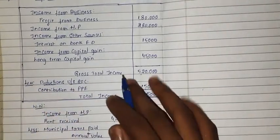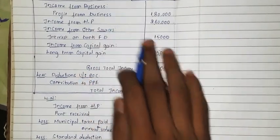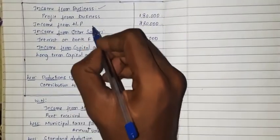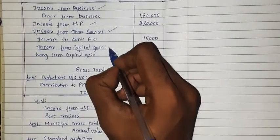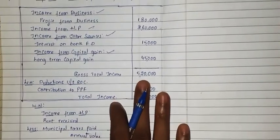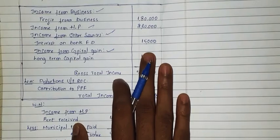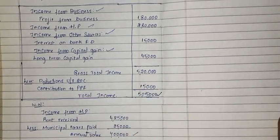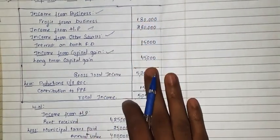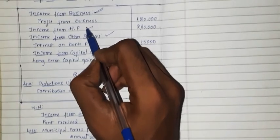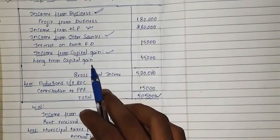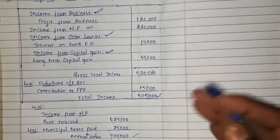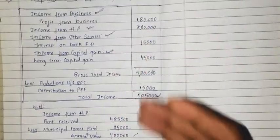The key takeaway from this problem: HUF income is a combination of different heads — income from business, income from house property, income from other sources, and income from capital gain. Income from salary should not be taken because it is personal income of a member of HUF. Business income is combined; house property is combined property of HUF family members; other sources and capital gain are also combined income of HUF.